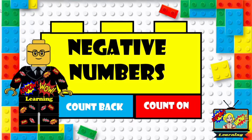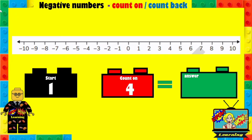Hi there, welcome to Kapow Wow Learning and you are watching Negative Numbers: Counting Back and Counting On. Here we have a number line with negative and positive numbers. We're going to start at 1 and count on 4. You can pause this and then play it to see if you got it correct.